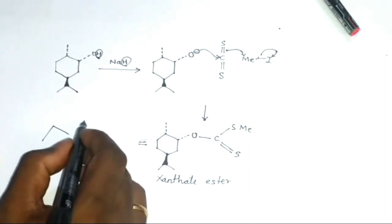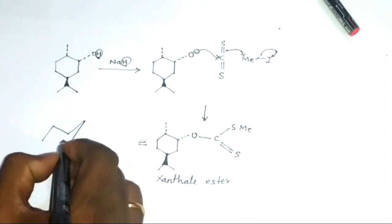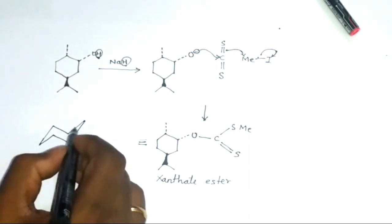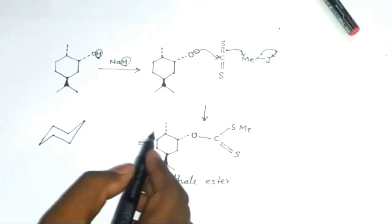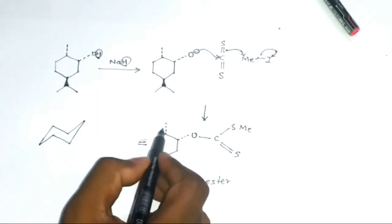The chair form for the xanthate ester. This is a chair form; the methyl group here is below the plane.